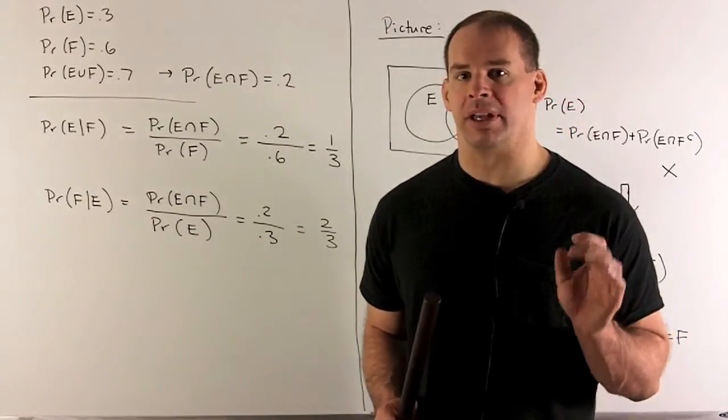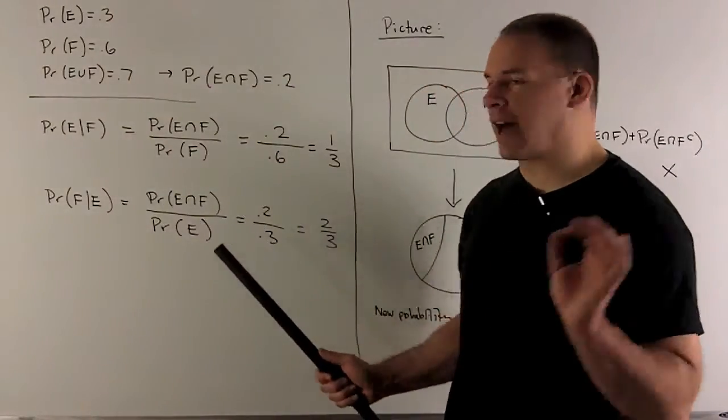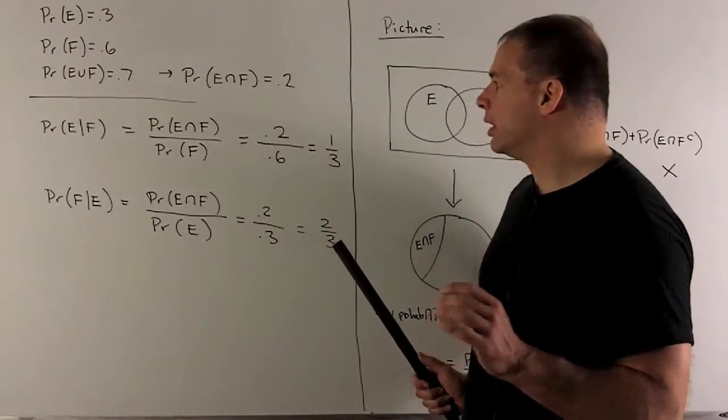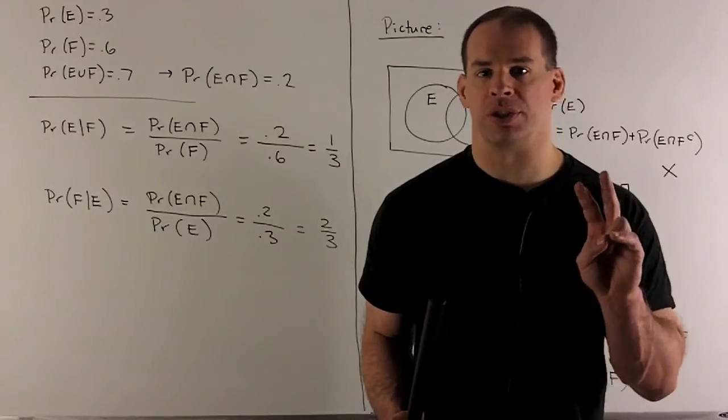Likewise, I take the conditional probability of F given that E occurs, same formula except we divide by probability of E, it's going to give me two-thirds. So we note conditional probabilities are not going to be equal in general if you switch the order.